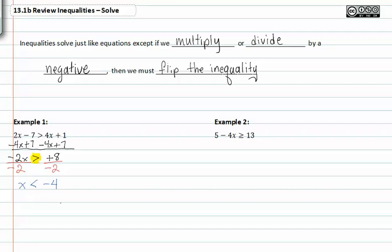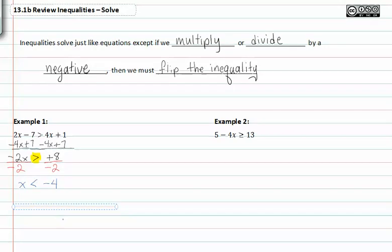Now we can graph it. Once we graph it, here's zero. To the right is positive infinity, to the left is negative infinity. We need to find negative four. If x is less than negative four, we have an open dot at negative four heading to the left.